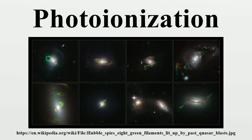Photo-ionization is the physical process in which an ion is formed from the interaction of a photon with an atom or molecule. Not every photon which encounters an atom or ion will photo-ionize it. The probability of photo-ionization is related to the photo-ionization cross-section, which depends on the energy of the photon and the target being considered. For photon energies below the ionization threshold, the photo-ionization cross-section is near zero.